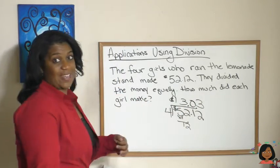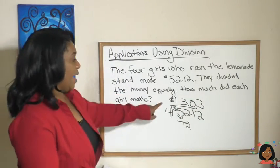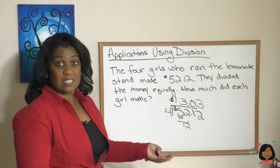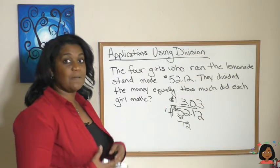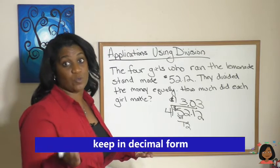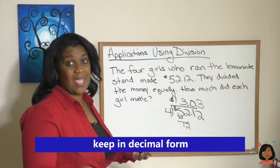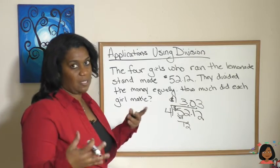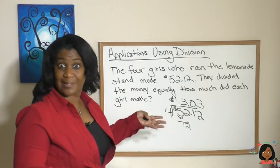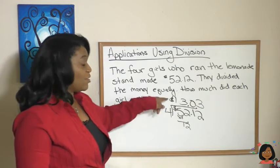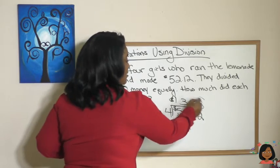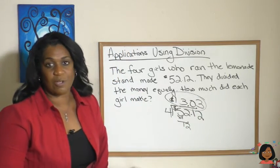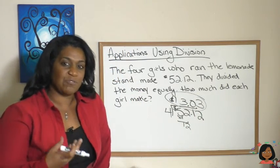Here it does divide equally and we have an answer of thirteen dollars and three cents. This is an instance where we keep it in decimal form because we're dealing with money — we're not going to throw out the three cents. Everybody is going to make thirteen dollars and three cents.